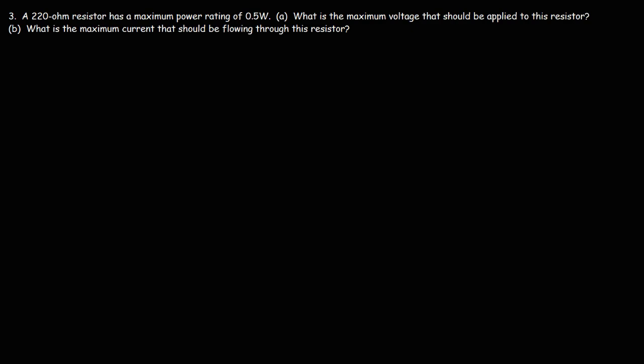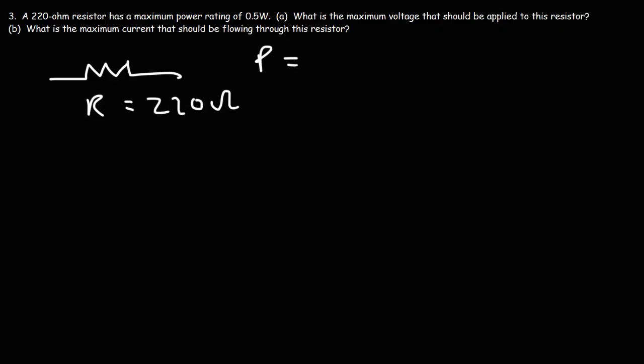Number 3: a 220-ohm resistor has a maximum power rating of 0.5 watts. What is the maximum voltage that should be applied to this resistor? When you buy a resistor, you're given two pieces of information: the resistance value and the maximum power it can handle. Using this, you can determine the maximum voltage you can safely apply or the maximum current that should flow through it. We know R equals 220 ohms and P equals 0.5 watts.